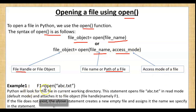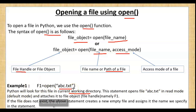For example: f1 = open('abc.txt'). Here abc.txt is in the same directory, so you give just the name and extension. No access mode is defined, so by default it opens in read mode. Python looks for this file in the current working directory. This statement opens abc.txt in read mode and attaches it to the file object f1.